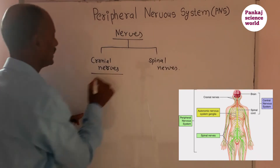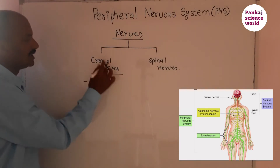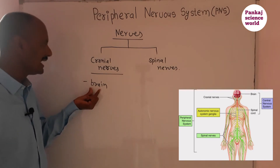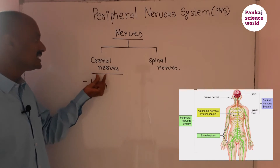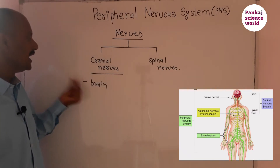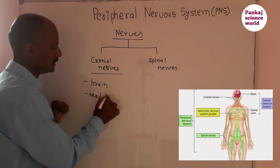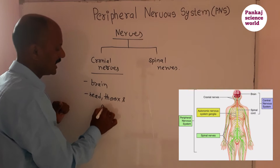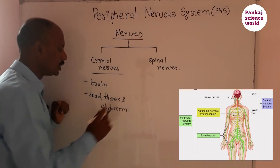The nerves that arise from the brain are called cranial nerves. These cranial nerves are connected to the various parts in the head, thorax, and abdomen.